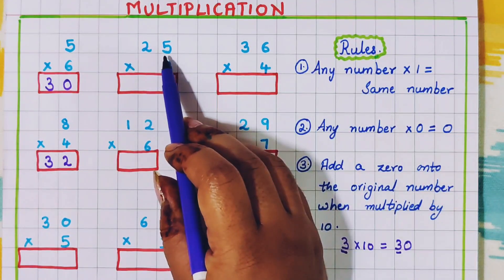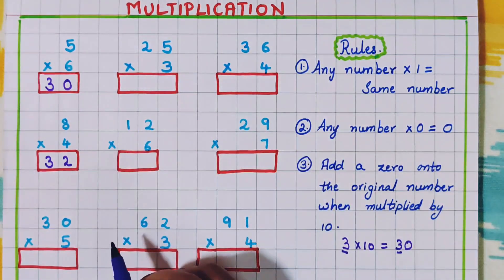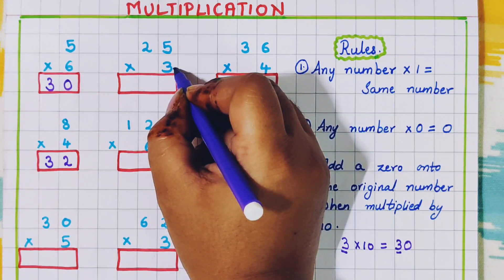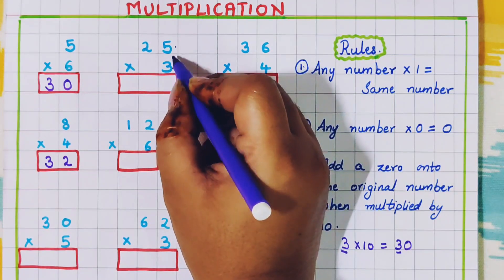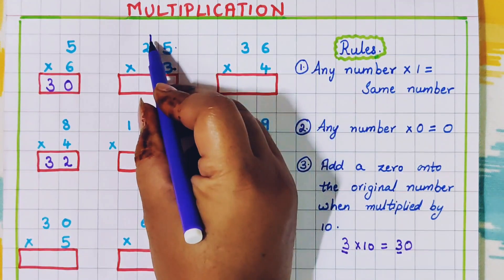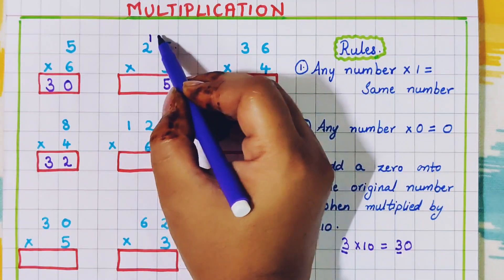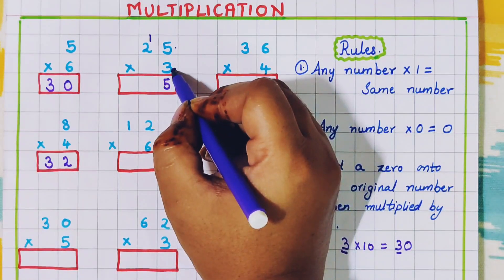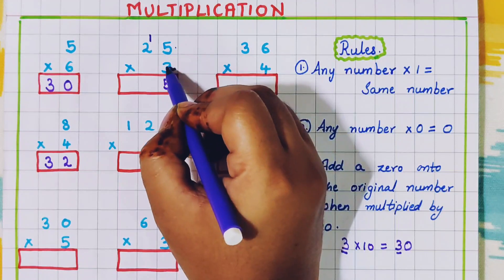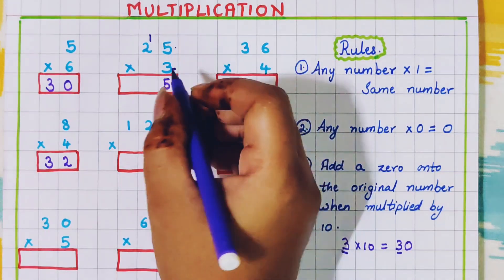Now let's see the multiplication in which 2-digit numbers are involved. Here: 25 into 3. First I am going to multiply 3 into 5 — 3 5s are 15. Since 15 is a 2-digit number, I will write 1 as a carry over and write 5 in the 1s place. Then I will do 3 into 2 — 3 2s are 6. Then 6 plus 1 carry is 7. So the answer is 75.